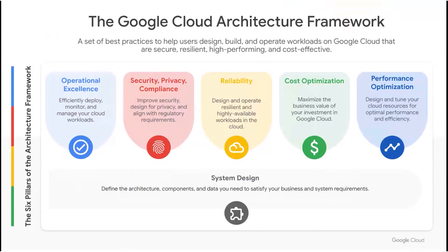I want to introduce you to the Google Cloud Architecture Framework, a set of canonical best practices to help you design, build, and operate a cloud environment that's secure, efficient, resilient, high-performing, and cost-effective. The Architecture Framework consists of six pillars, each focused on a specific topic, highlighting key areas critical to designing and operating your workloads.